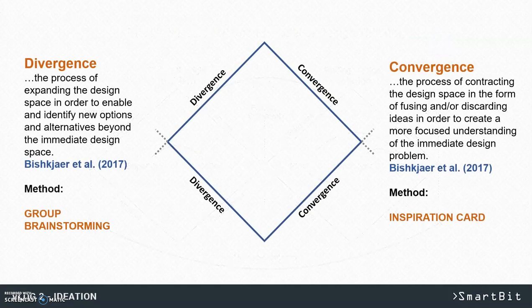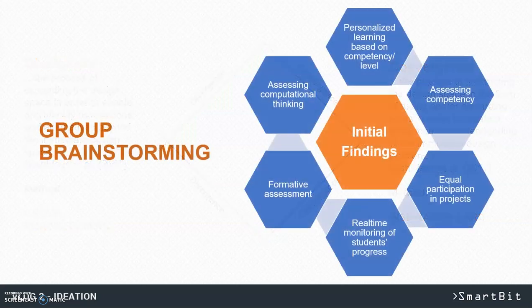Divergence is the process of expanding the design space in order to identify new options beyond the immediate design space. For this we found group brainstorming to be a more suitable method. As a polar opposite, convergence is a contraction of design space by means of fusing some and discarding other ideas to create a more focused understanding of the design problem. Our chosen method for this step was Inspiration Cart.